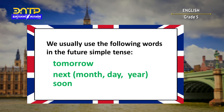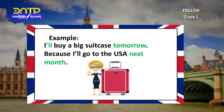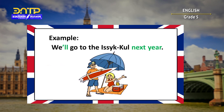We usually use the following words in the future simple tense. For example: I'll buy a big suitcase tomorrow because I'll go to the USA next month. We'll go to the USA next year.